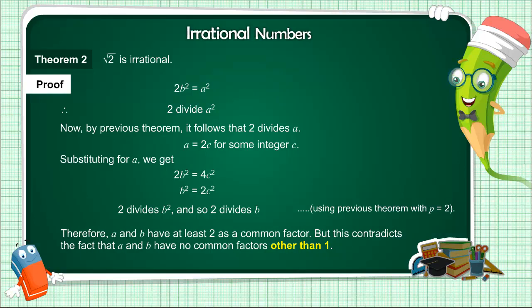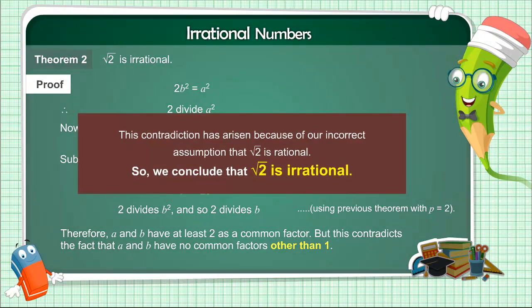But this contradicts the fact that A and B have no common factors other than 1. This contradiction has arisen because of our incorrect assumption that √2 is rational. So we conclude that √2 is irrational.